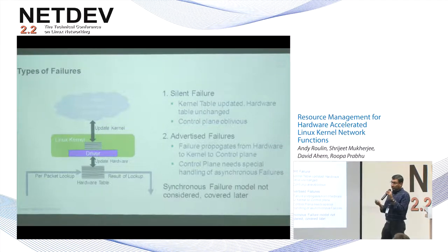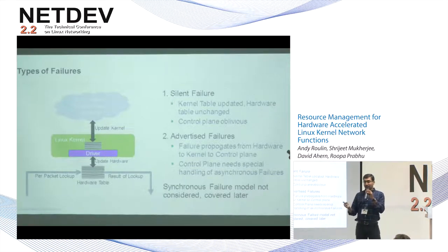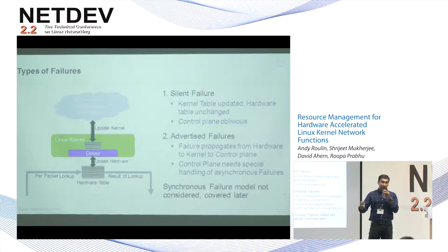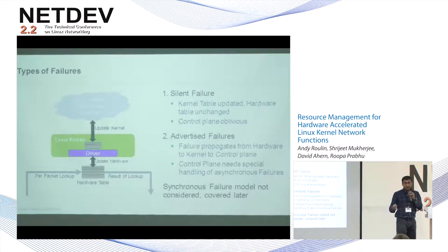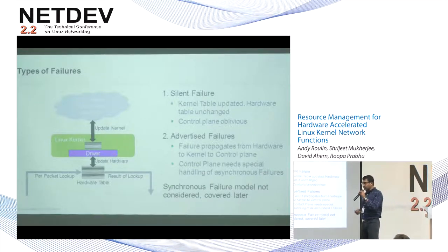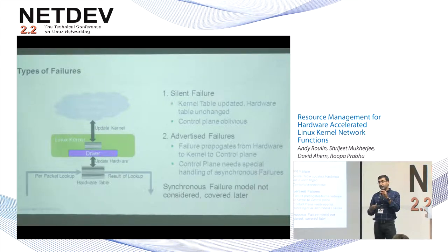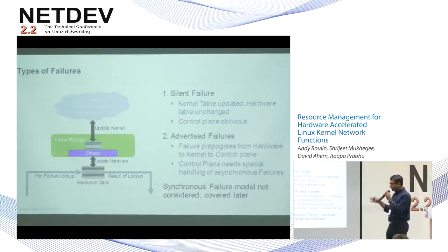What are the types of failures you can have? The worst, and everybody's favorite, is the silent failure — you told me to do something and I just decided not to do it. One of the most problematic cases is the kernel table updating but the hardware table not updating, so packet lookups return a result different from what the user expects, and the control plane is oblivious to that failure. The other kind is advertised failures, which will almost always be asynchronous. This creates a burden on the user space app, which now has to revert state it has already advanced — and maybe already advertised to the rest of the world.